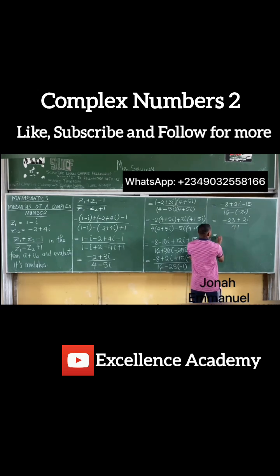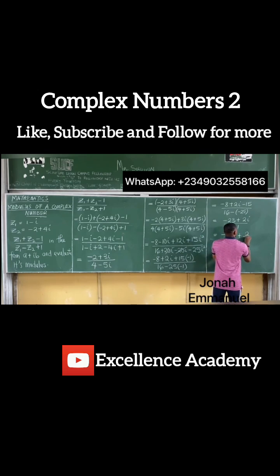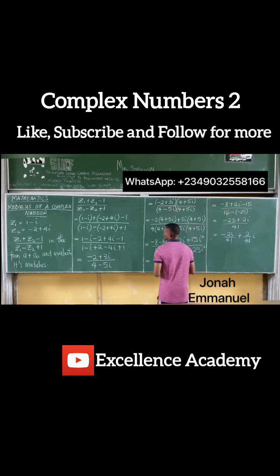So hence, this will be equal to minus 23 over 41 plus 2 over 41 all into i. So we've gotten the value of this.